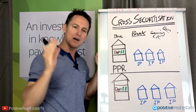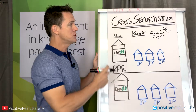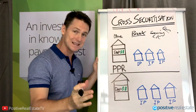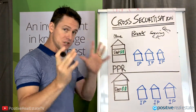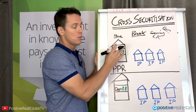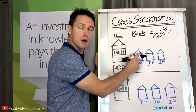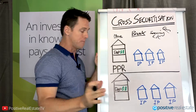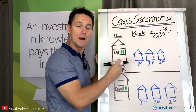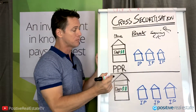Now, every single bank in Australia will offer you to do what's called cross-securitization or cross-collateralization, which means they will use your home as the security to buy the next property. Which is fine - it happens, it's normal - but it's not the right way to do it for a sophisticated investor, an investor who wants multiple properties.